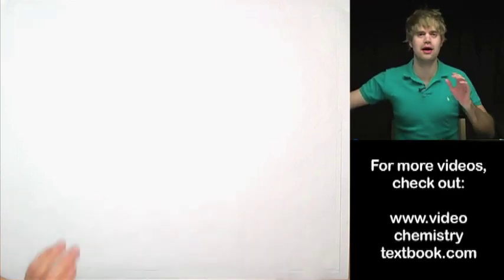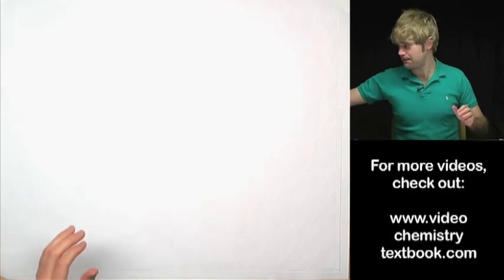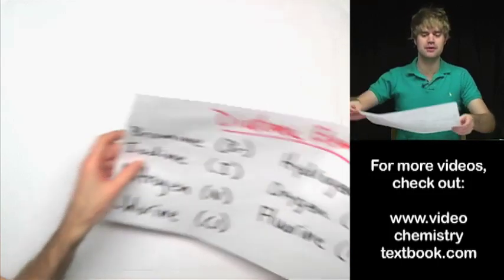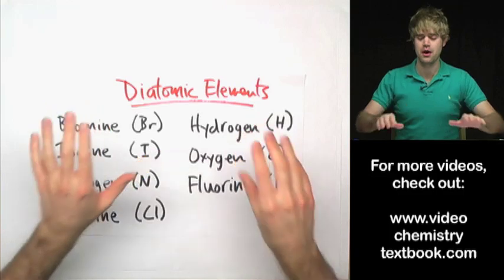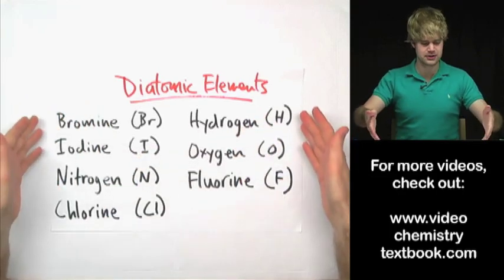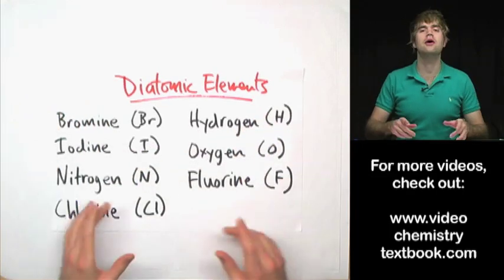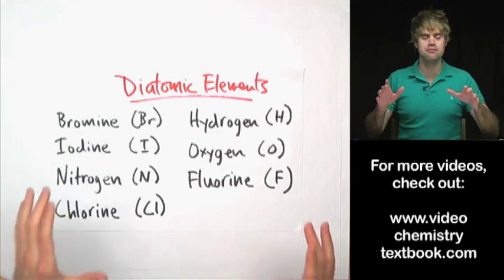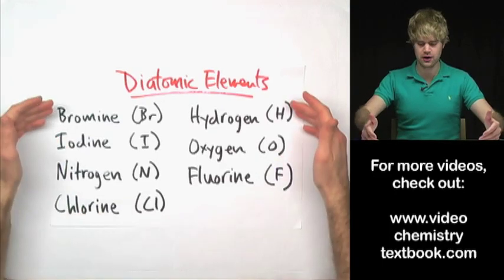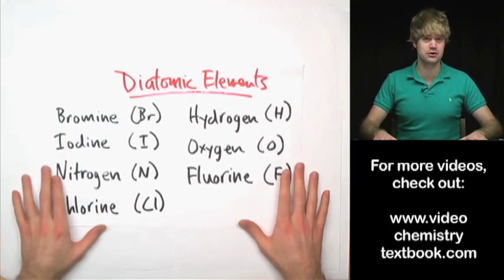There are about a hundred elements on the periodic table and of those hundred elements, seven of them are the diatomic elements. These are the diatomic elements here and at the end of the video I'll teach you some memory tricks so that you can remember which of the elements are diatomic.